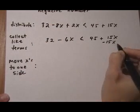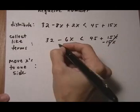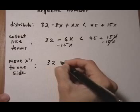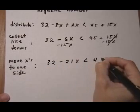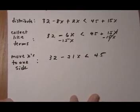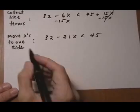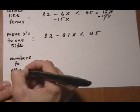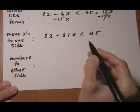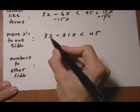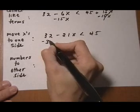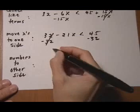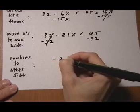So I want to get rid of the 15x over here which means I subtract it and I have to balance it on the other side. So that gives me 32 minus 21x is less than 45. Now we have to move numbers to other side. That means get rid of this 32 here because we're trying to get x by itself. Take away 32, take away 32. Cancels out and I get minus 21x.